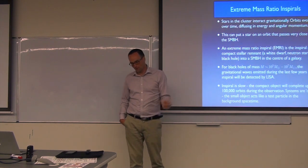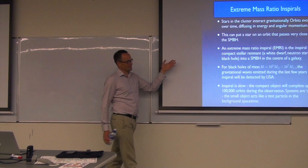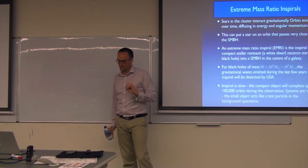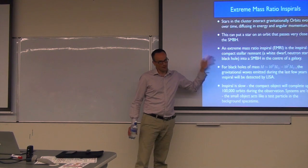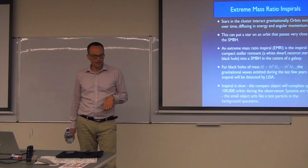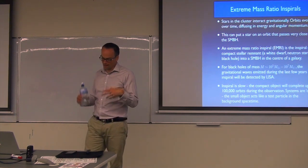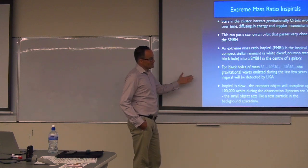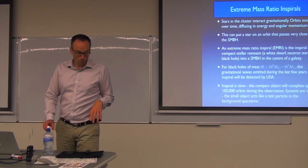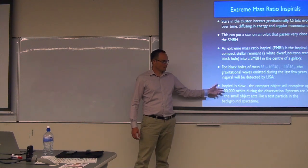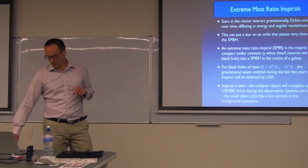The gravitational wave frequency is determined by the total mass of the system, which is basically the mass of the central black hole. So if that central black hole has the right mass to put it in the LISA range - which is 10^5 to 10^7 solar masses - then these can be a LISA source during those final phases where the orbital period is an hour. The inspiral is quite slow because of the extreme mass ratio, so you get many orbits in the LISA band - as many as 100,000 or more - and we can use the small object as a probe of the spacetime structure of the larger black hole.